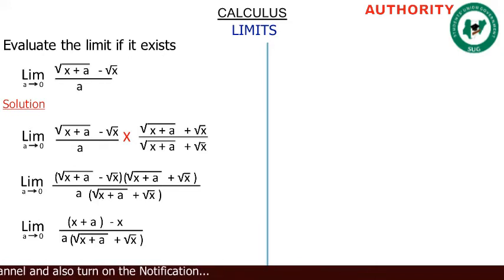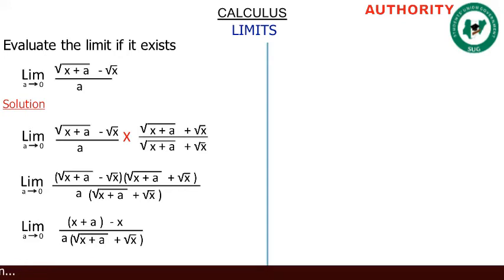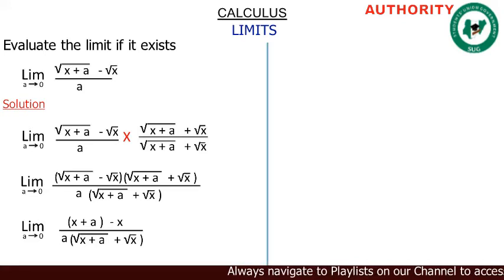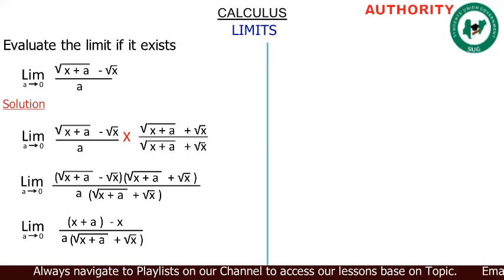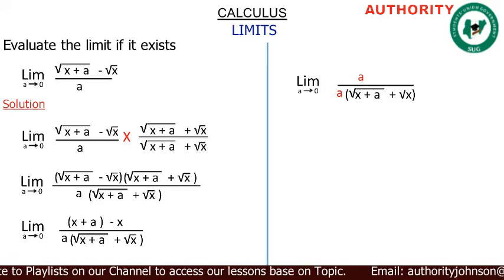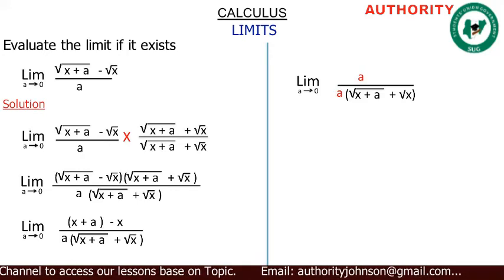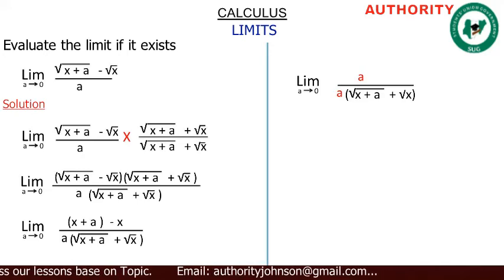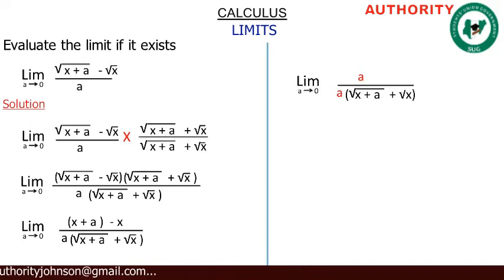Performing the numerator operation, we have the limit as a approaches zero of (x plus a) minus x, all over a times the square root of (x plus a) plus the square root of x. Opening the brackets in the numerator, x minus x gives zero, leaving just a. So we have the limit as a approaches zero of a, all over a times the square root of (x plus a) plus the square root of x.